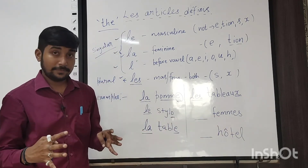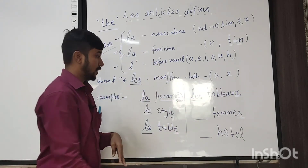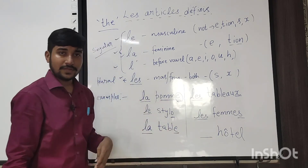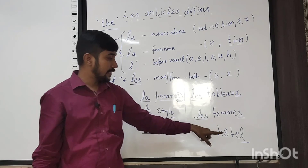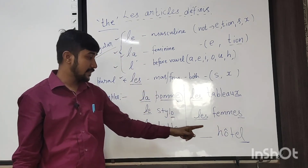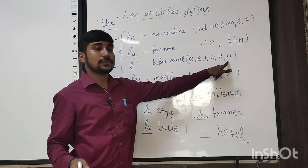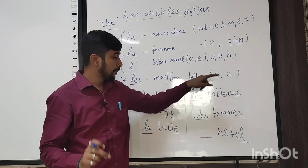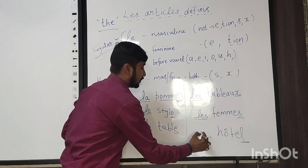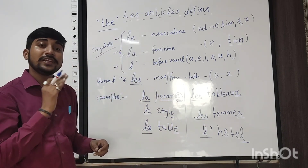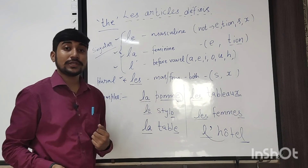'Femmes' means women. It ends in 's,' so it is plural. We use 'les' here. The last word ends in 'l,' which would normally indicate masculine. But we also check the starting letter — it starts with 'h.' In French, 'h' is considered a silent vowel. So instead of 'le,' we use l'apostrophe. We pronounce it together: 'l'hôtel' — that means hotel.